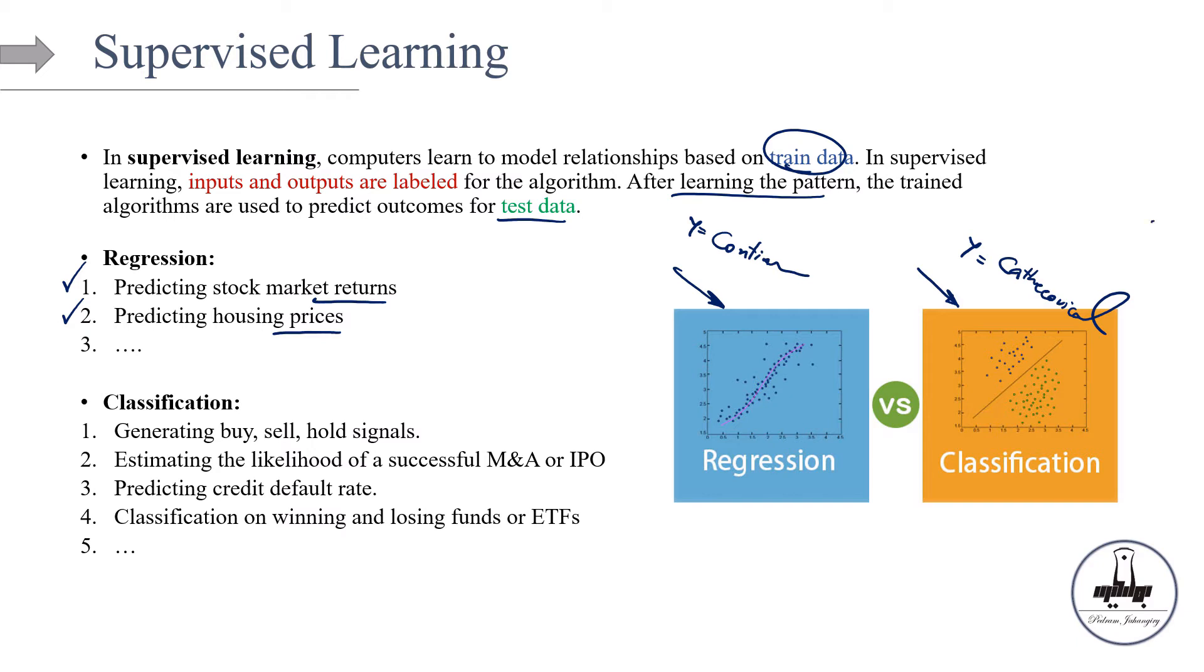Then another set of models are basically the classifications. Let's look at some examples. Imagine you want to generate buy, sell or hold signals in the stock market. So your target variable here can take three values. So you can even label them in whatever case you want. You can call it, for example, one minus one zero or buy, sell, hold and et cetera. So this is one example.